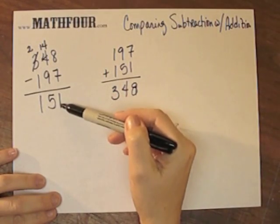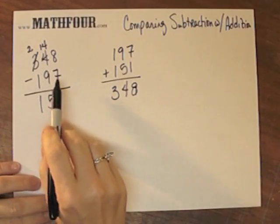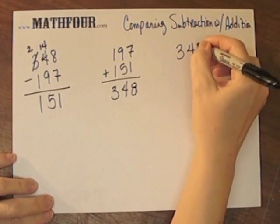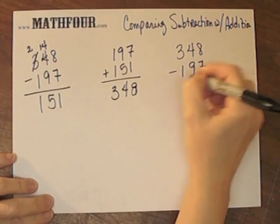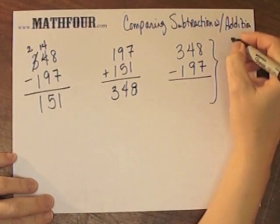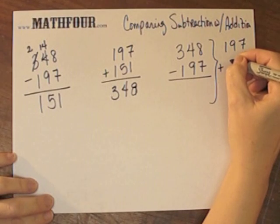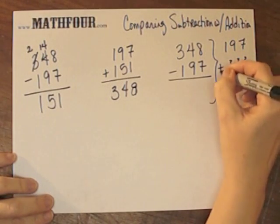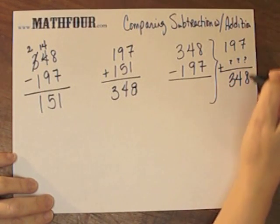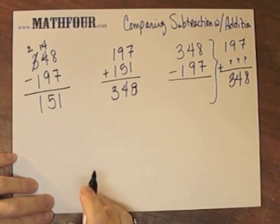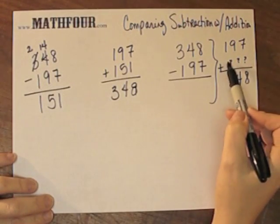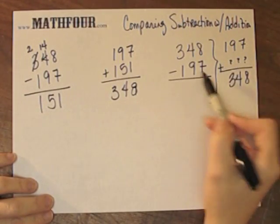plus 151 is 348. If you consider that 348 minus 197 actually is the same as 197 plus something equals 348, and work it from this point of view, this becomes really finding out what this number is, which is really subtraction.